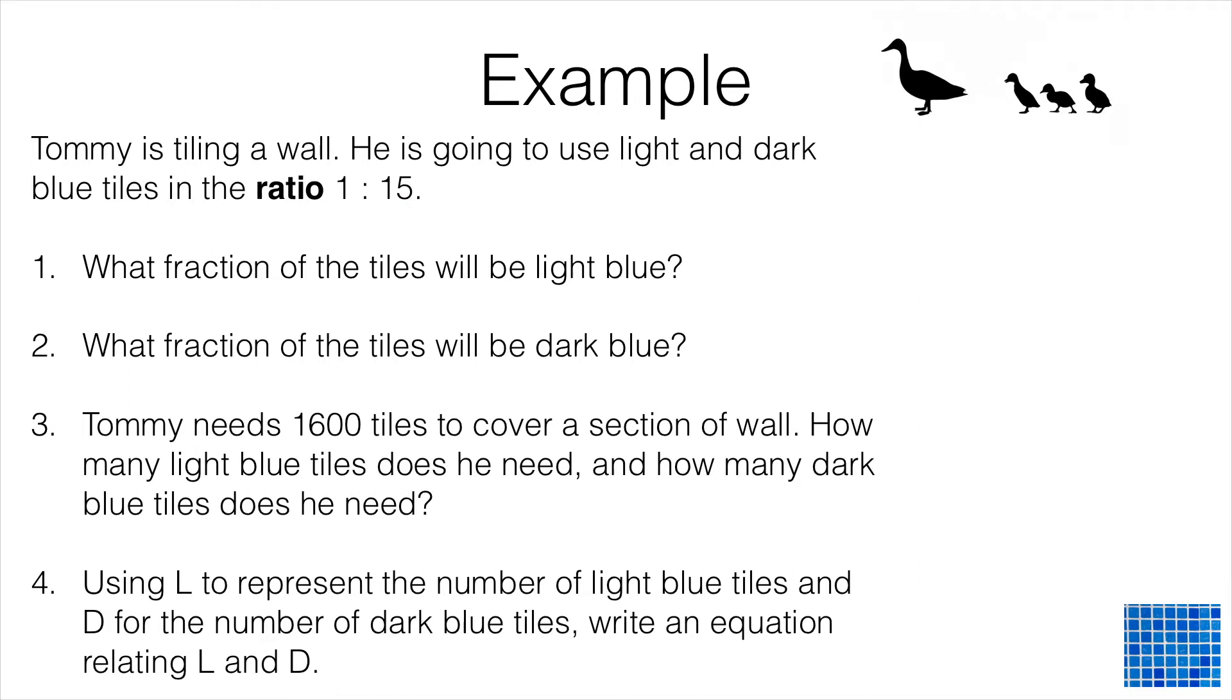Question 1 asks us what fraction of the tiles will be light blue? The ratio tells us that for every one light tile he uses, he's going to use 15 dark tiles. In other words, out of every 16 tiles, he uses one of them is going to be light blue and 15 of them are going to be dark blue.